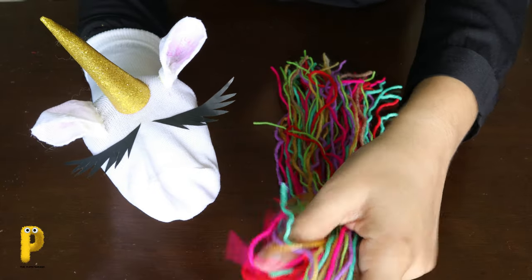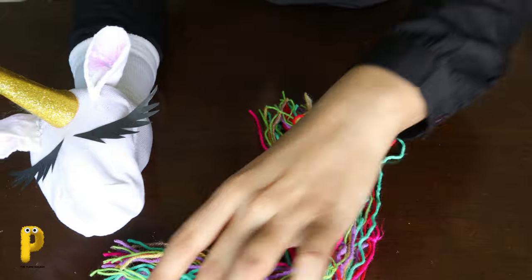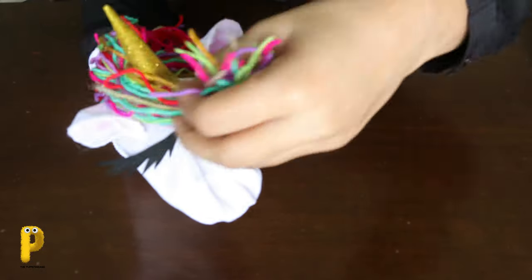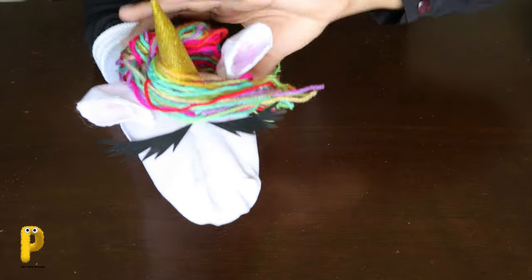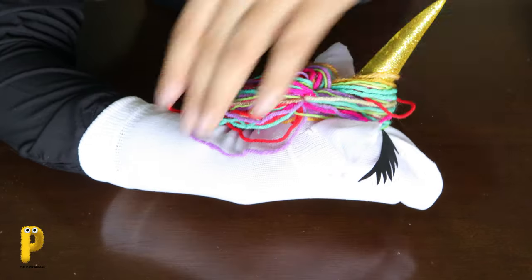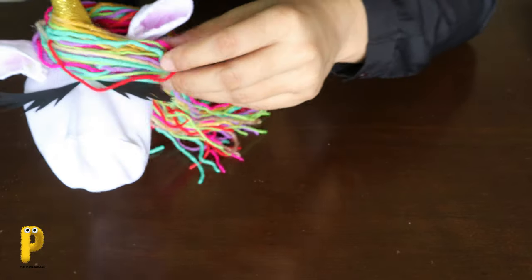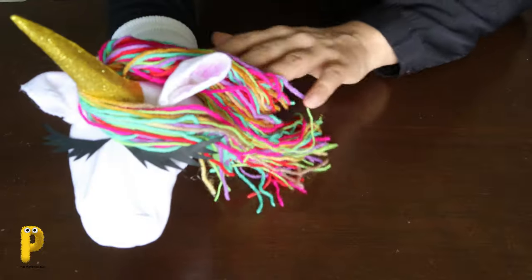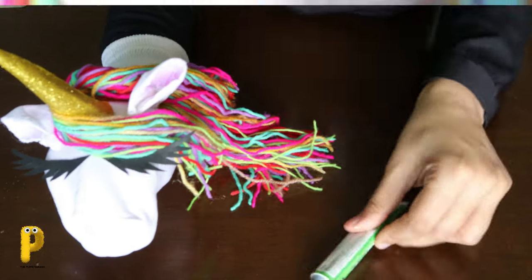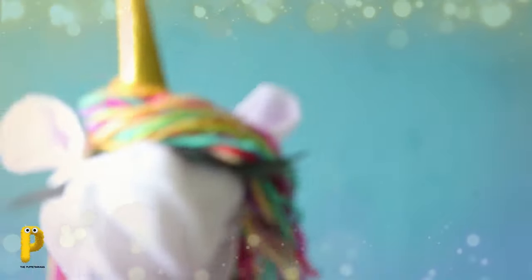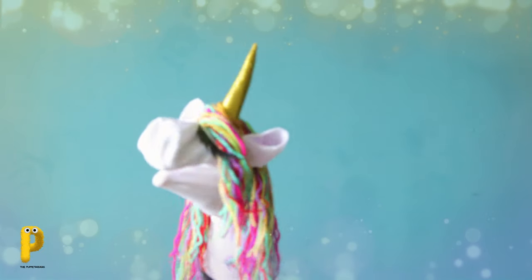And the last and final step. Take a little bunch for the fringes and the rest we are going to put at the back and secure with some glue. Stick the hair at the back with some glue and a little bit around the horns too. Isn't our unicorn lovely? So pretty!